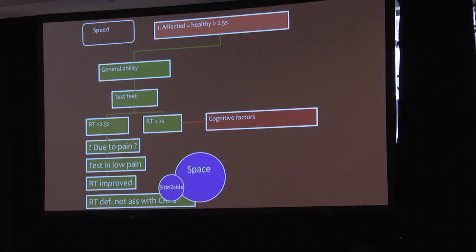So here's a potential treatment pathway. You see that the affected hand is similar to the healthy hand and is taking longer than 2.5 seconds. My interpretation here would be they're probably just not good at this task. Maybe they have dyslexia, might be their general ability. And we can then test another body part, and either we'll find they're still hopeless and we don't know how to interpret it—we have to do some more tests—or they're good at the other body part, and I would say something, I don't know what, but something is driving a delay that's not about relative side-to-side differences.